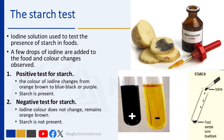Many different foods contain starch and others do not. The iodine solution is used to test for the presence of starch in different foods. When a few drops of iodine solution are added to the food and the color of iodine changes from orange-brown to blue-black or purple, this is a positive test for starch — it indicates that starch is present in that food.